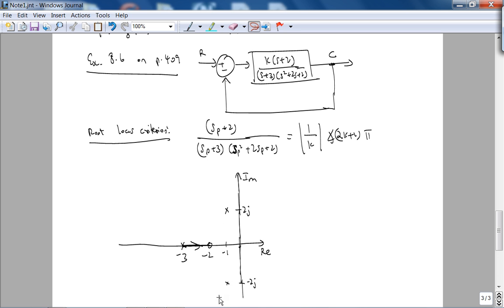Suppose the root locus goes something like this. Then you know that there are no j omega axis crossings and you don't have to apply the Routh-Horowitz criterion. You could apply the Routh-Horowitz criterion to check, but you don't need to use it to find a value of k for the j omega axis crossings. Number two, this rule is very simple to apply. Consider an epsilon very close to, let's say, -1+2j. You could do -1-2j as well, but just consider a point right there.